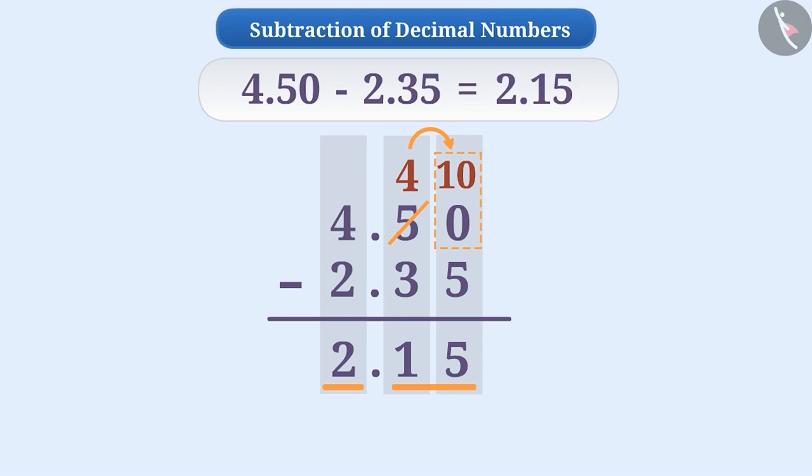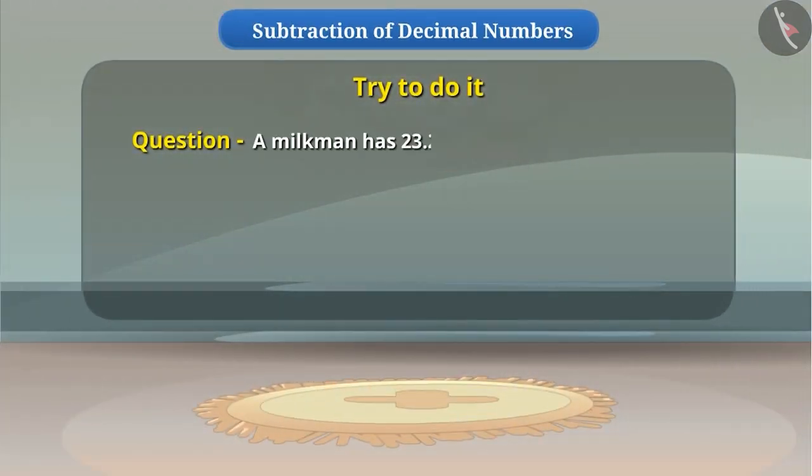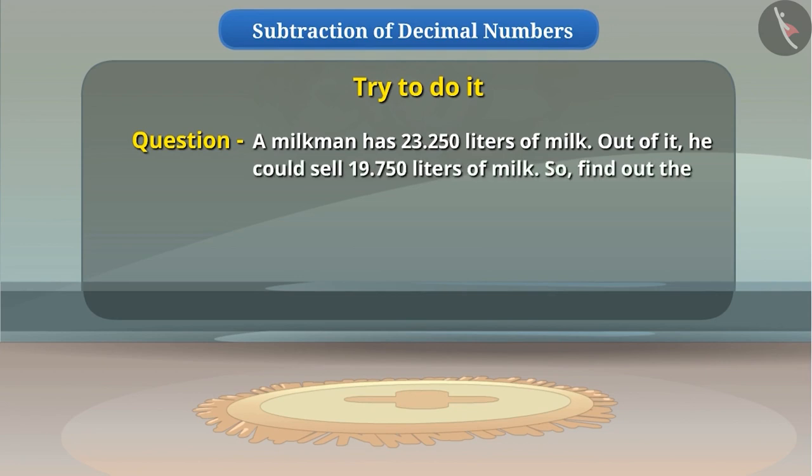So can you do the subtraction on decimal numbers now? Try and solve this problem. A milkman has 23.250 liters of milk. Out of this, he could sell 19.750 liters of milk. So find out the remaining amount of milk. If you get 3.5 liters as your answer, then congratulations, because you have learnt the subtraction of decimal numbers properly.